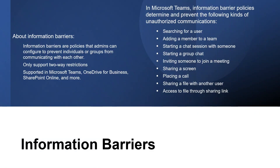So what are information barriers? Information barriers are policies that admins can configure to prevent individuals or groups from communicating with each other. When information barrier policies are in place, people who shouldn't communicate with other specific users can't find, select, chat, or call those users. With information barriers, checks are in place to prevent unauthorized communication.